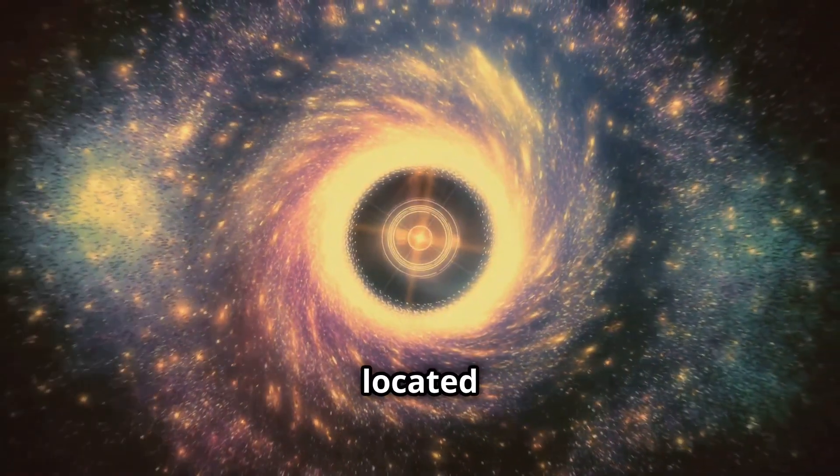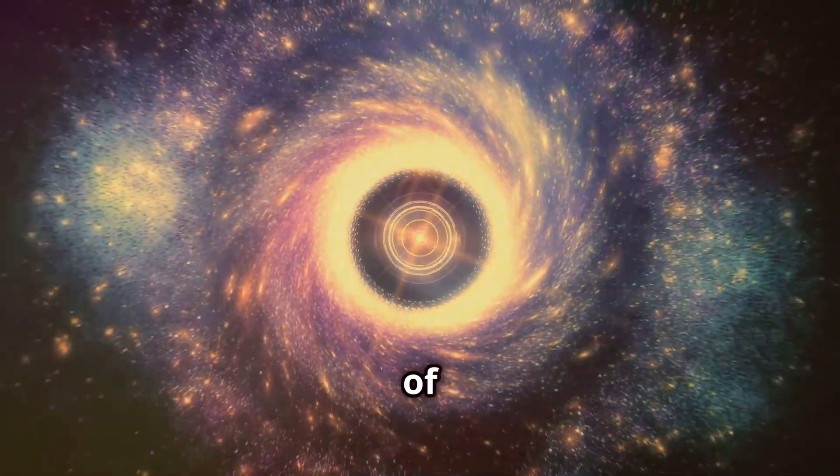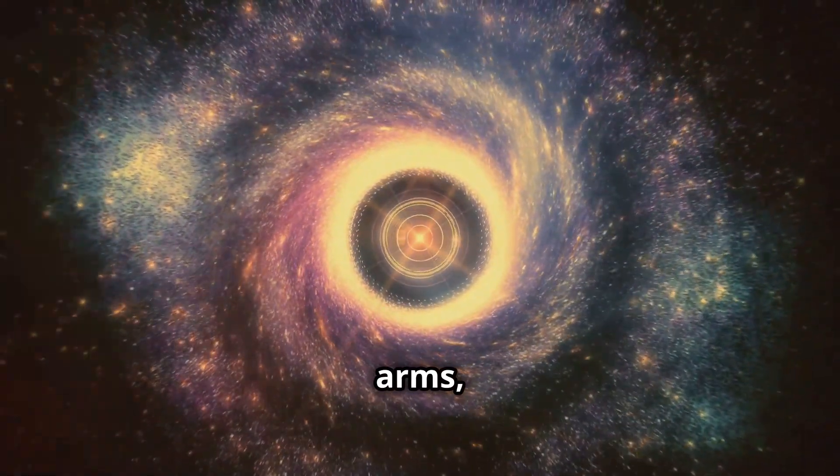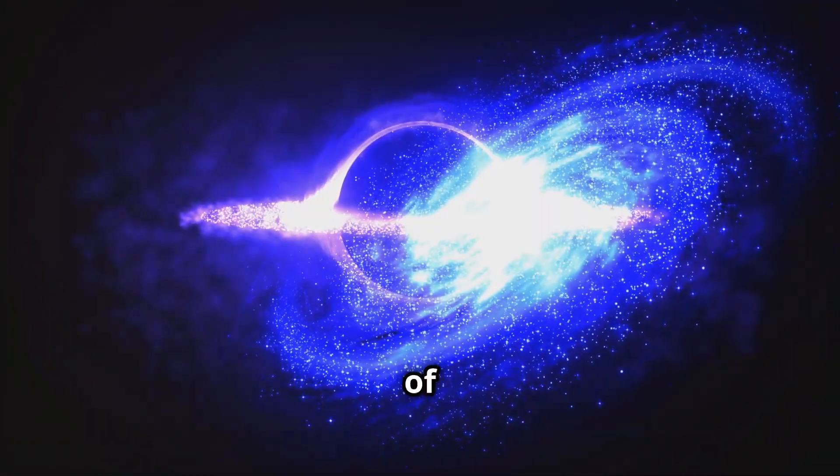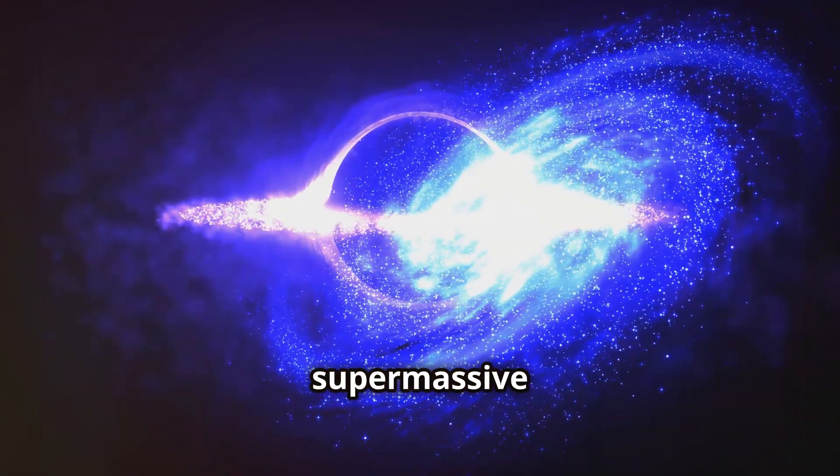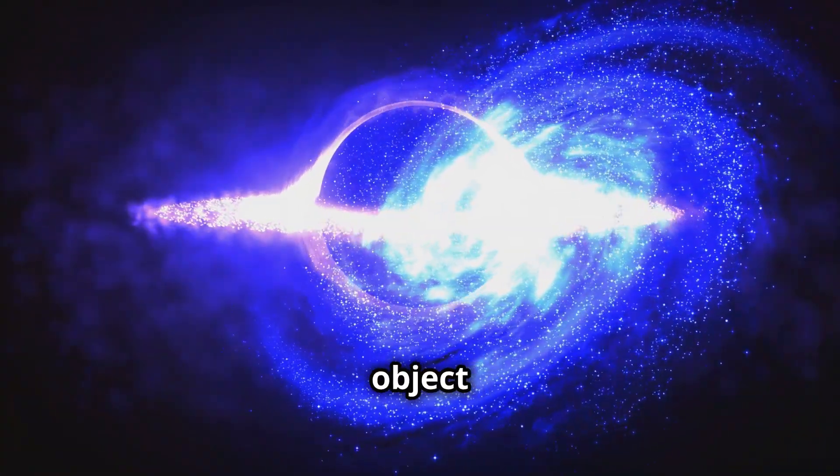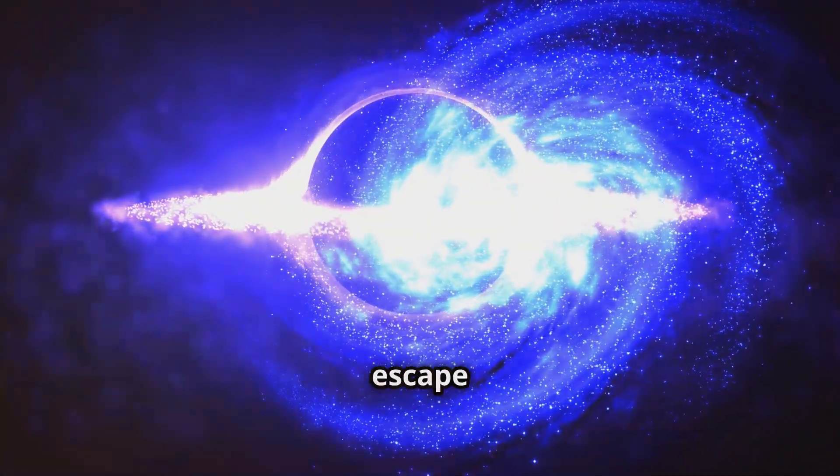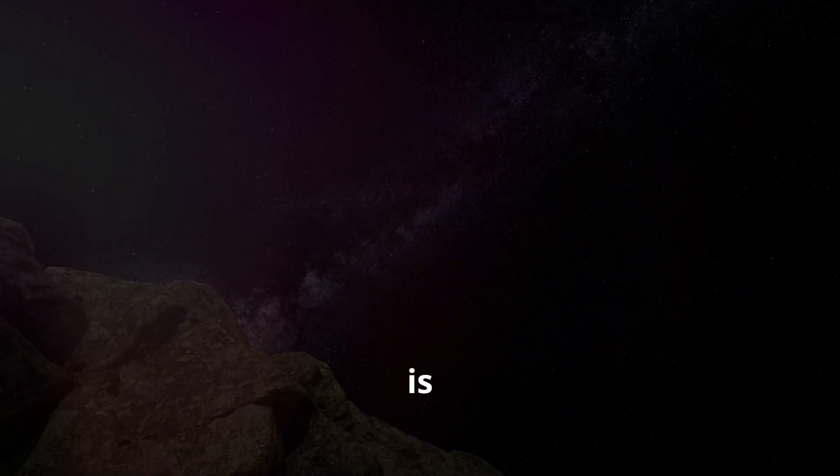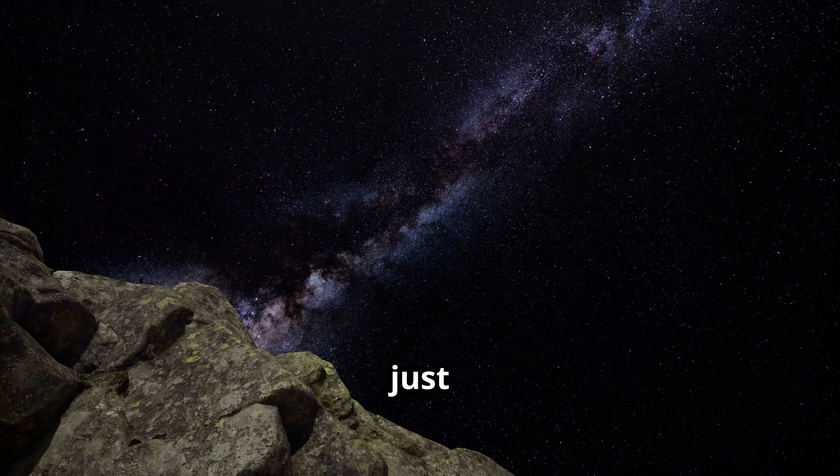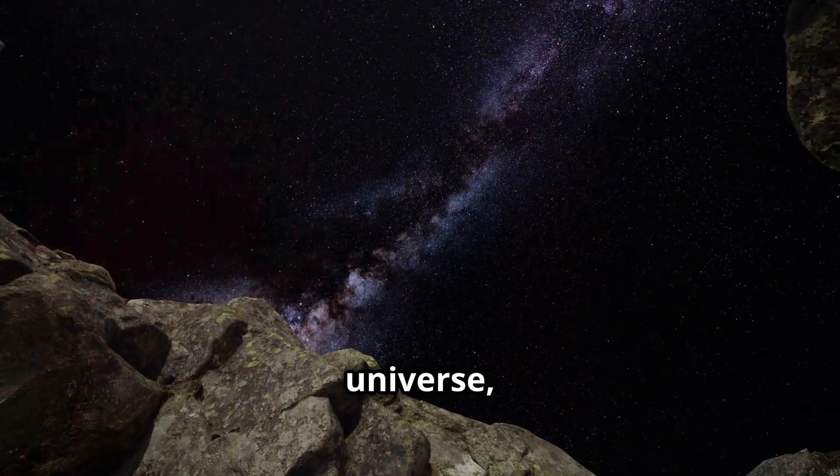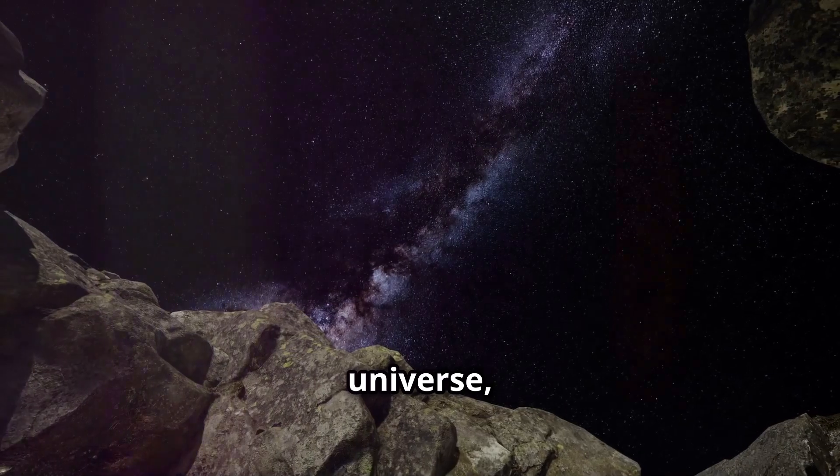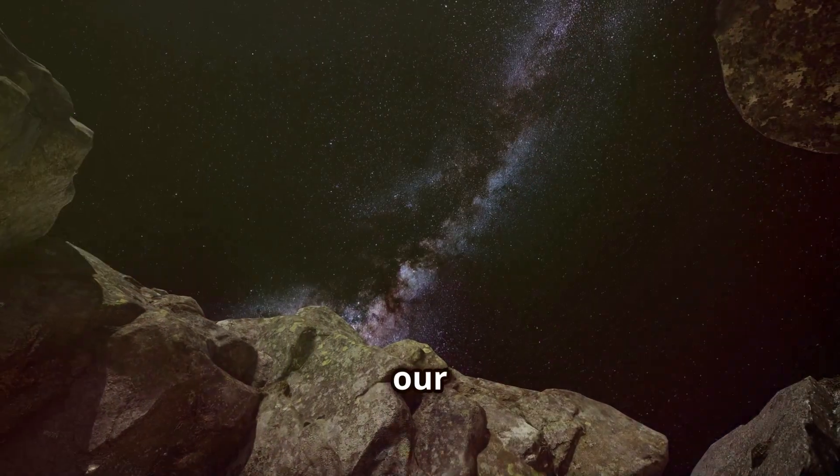Our sun is located on one of these spiral arms, about 26,000 light years from the galactic center. At the heart of the Milky Way lies a supermassive black hole, an object so dense that not even light can escape its grasp. The Milky Way is just one of billions of galaxies in the observable universe, but it's our home.